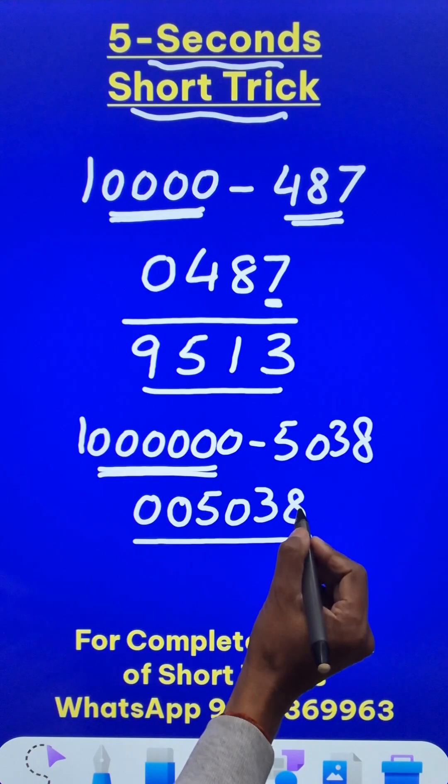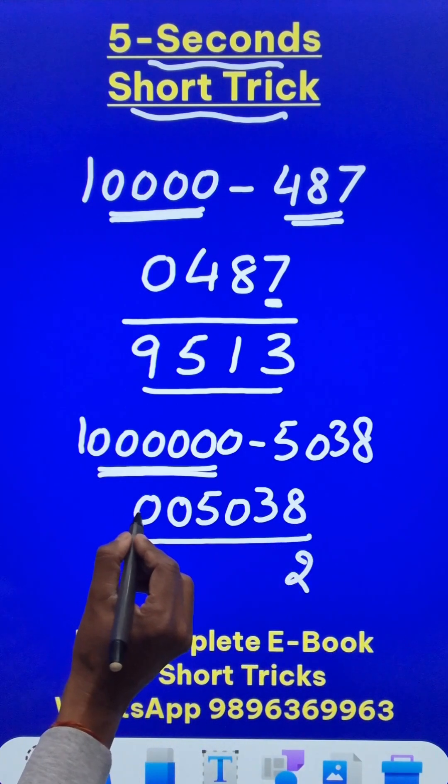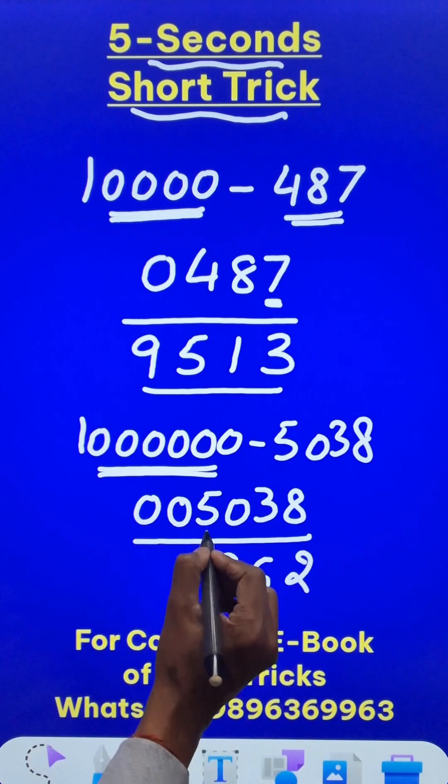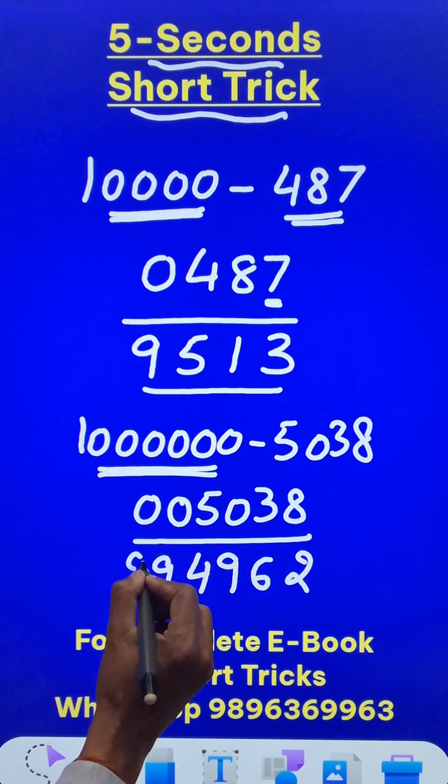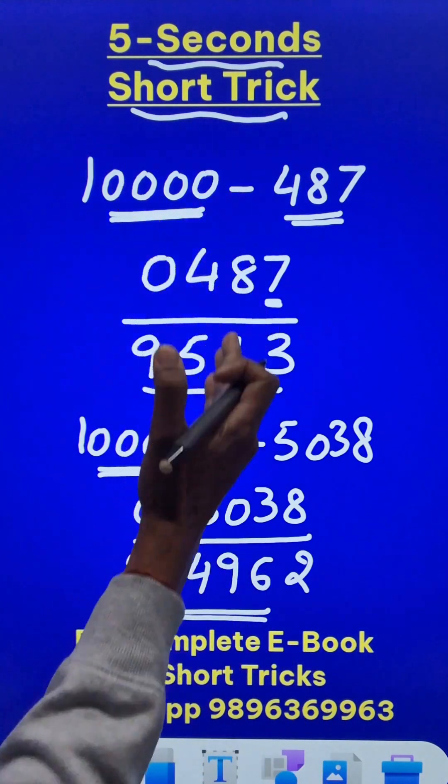Last digit to be subtracted from 10, 10 minus 8 is 2 and all other digits have to be subtracted from 9. So this gives me 6, 9 minus 5 is 4 and then 2 nines. Can you use the traditional approach or the calculator to check your answers?